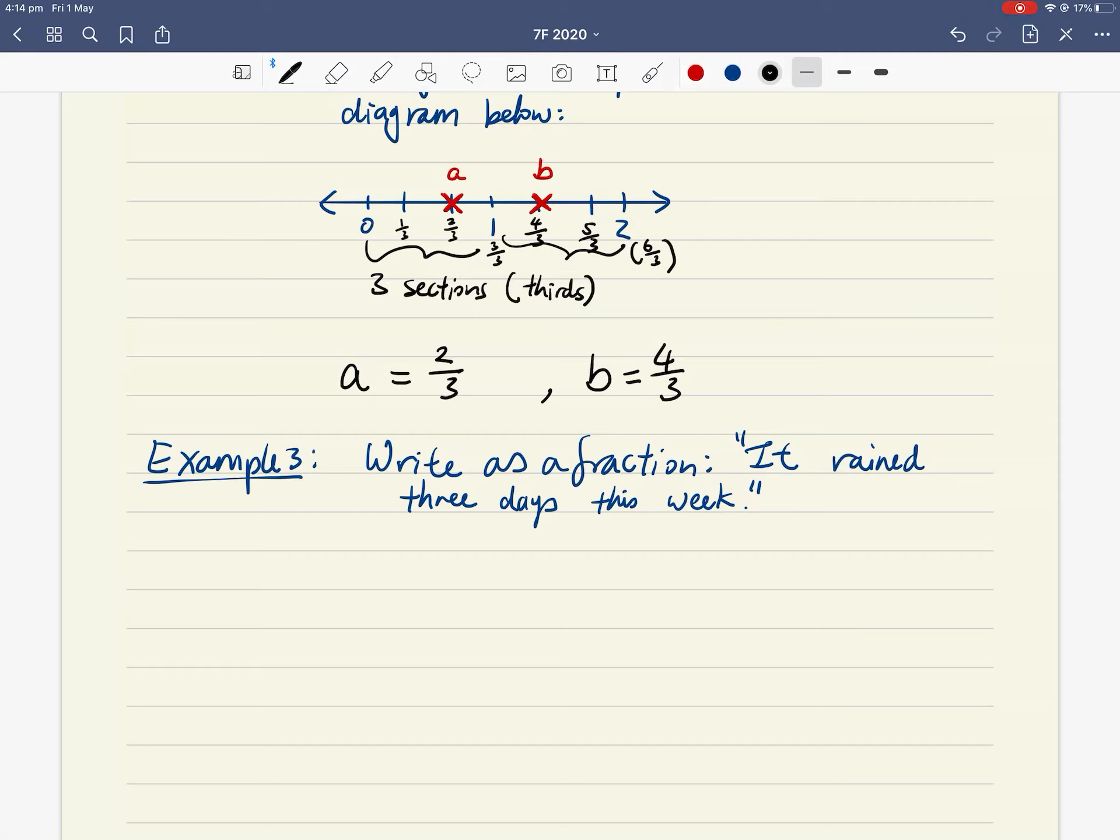The denominator you're thinking is, well, how many days are there in total in a week? Seven. So three out of seven days it rained, so the fraction of interest is three sevenths because it's three days out of seven days in a week.